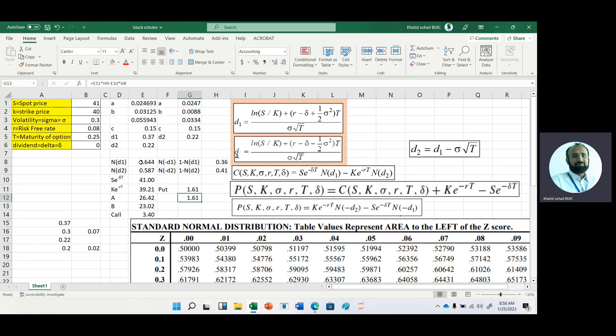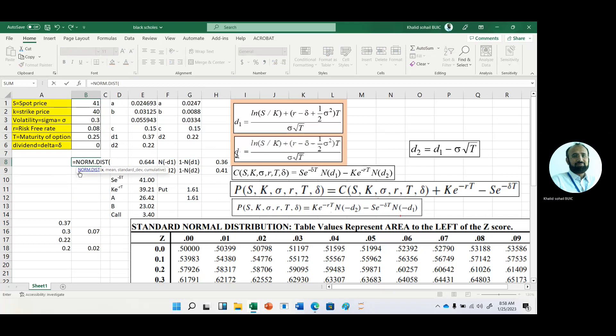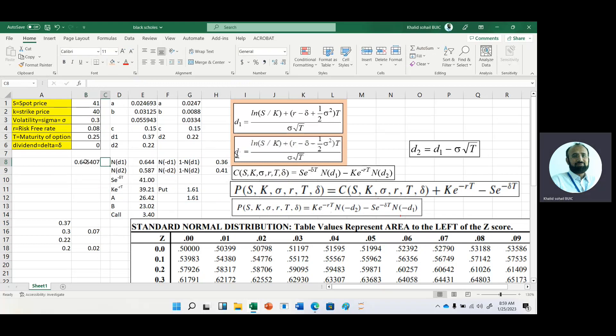You can get this value instead of using the Z table variable. If you are using Excel, with the help of NORM.DIST function, I am using equals NORM.DIST. The value is 0.30, then 0 mean, unit standard deviation, and cumulative value is true. You can see that you have almost the same number, 0.645. Thank you very much for watching this video.